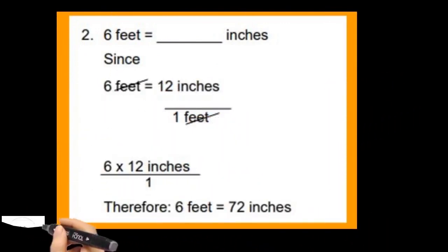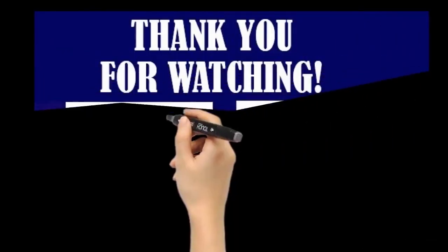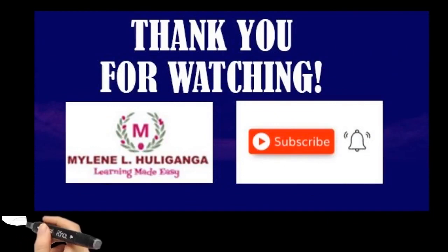For example, number two: 6 feet is equal to how many inches? Cancel the common unit and apply cross multiplication, so it will become 6 times 12 inches. Therefore, 6 feet is equal to 72 inches. This is teacher Mylene. Thank you for watching and please subscribe to my YouTube channel.